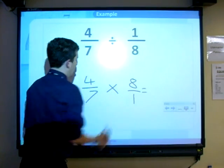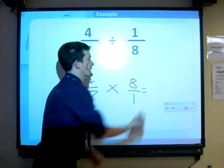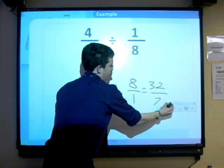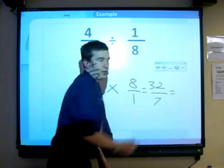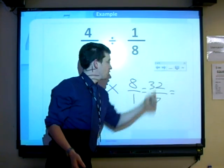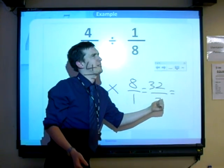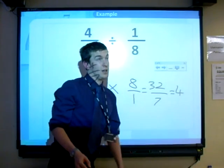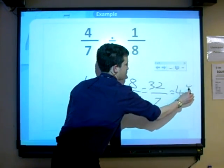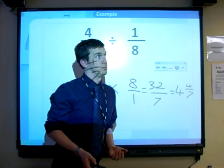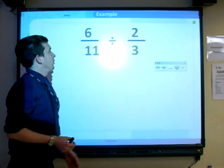And then same again. 4 times 8, 32. 7 times 1, 7. Now if you want, you can write that as a mixed number. How many 7s go into 32? 4, remainder 4. And we're working in 7s, so 4 and 4/7. I hope that's right, I think it is.